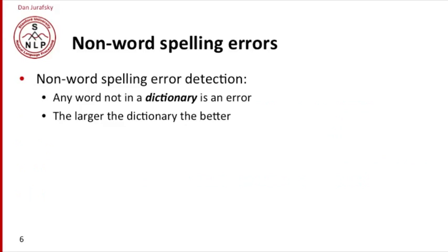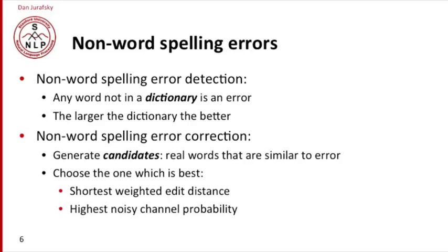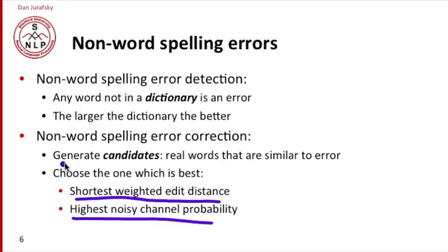How do we detect non-word spelling errors? The traditional way is to use a large dictionary — any word not in the dictionary is an error, and the larger the dictionary, the better this works. For correcting these non-word spelling errors, we generate a set of candidates: real words that are similar to the error, then we pick whichever one is best. We'll talk about the noisy channel probability model for doing that, as well as the shortest weighted edit distance method. We find words not in the dictionary, generate a candidate set of similar real words, and pick the best one.